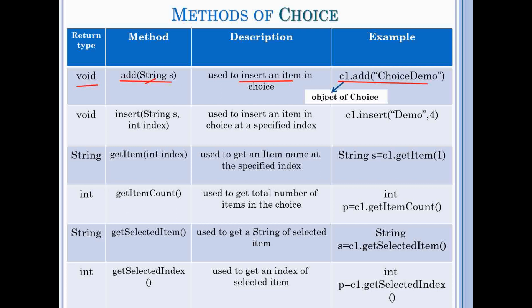Here c1 is an object of choice and we add choice demo item in our choice. Second is an insert method with two parameters string and integer which are used to insert item at a specific location in choice.